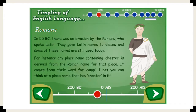Leading on from last lesson, we know that in 55 BC there was an invasion by the Romans into England and the Romans brought us Latin. The Romans gave Latin names to places and some of these names are still used today. For example, places with the word 'Chester' in them are derived from the Roman name for camp. Your next job on the worksheet in Google Classroom is to try and think of four different places that have 'Chester' in the name.